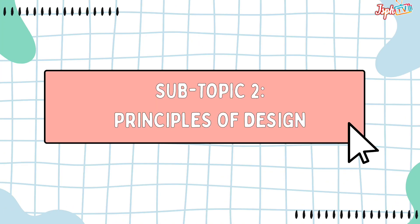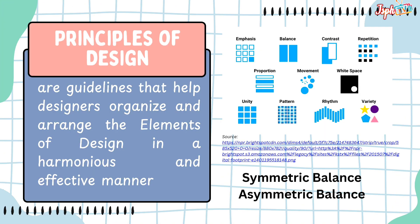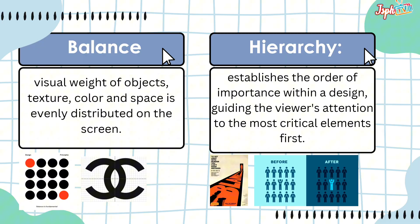Next, the Principles of Design. Principles of Design are guidelines that help designers organize and arrange the elements of design in a harmonious and effective manner. We have symmetric balance and asymmetric balance. Balance is a visual weight where objects' texture, color, and shape are evenly distributed on the screen, while hierarchy establishes the order of importance within a design, guiding the viewer's attention to the most critical elements first.